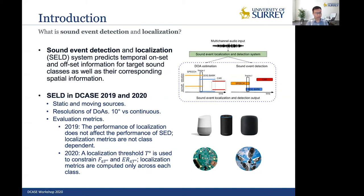Perhaps the biggest improvement is evaluation metrics. In 2019, the performance of localization does not affect the performance of SED, and localization metrics are not class-dependent. But in 2020, they used a threshold of T degrees to constrain F-score and error rate. They considered two positives predicted under a threshold of T, which is equal to 20 degrees from the reference. And the localization metrics are computed only across each class.